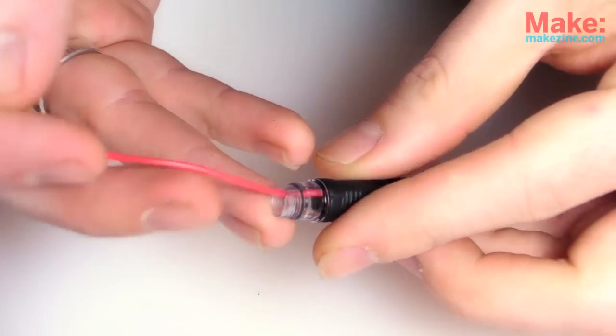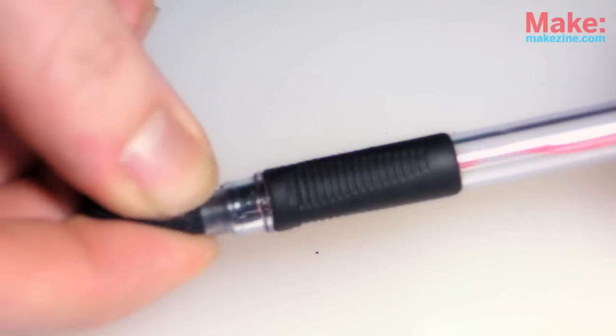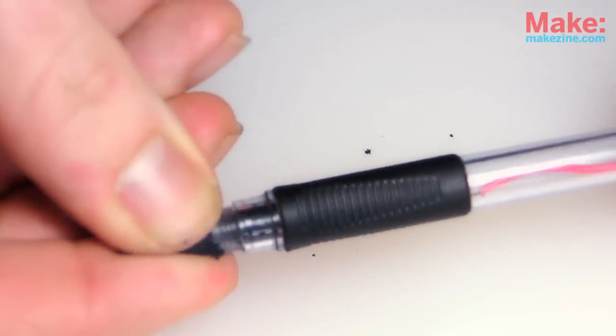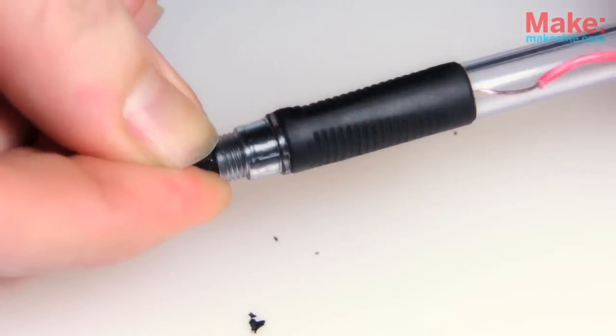Thread my wire through the barrel and use it to pull the foam in until there's about a quarter of an inch tip left exposed.